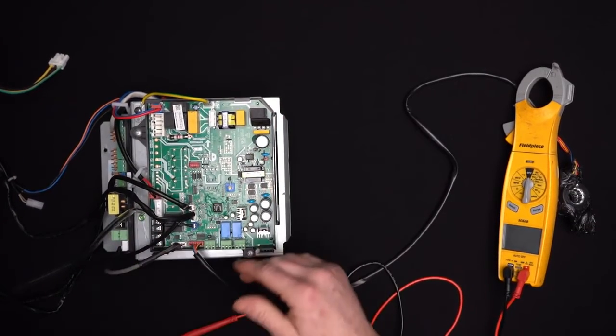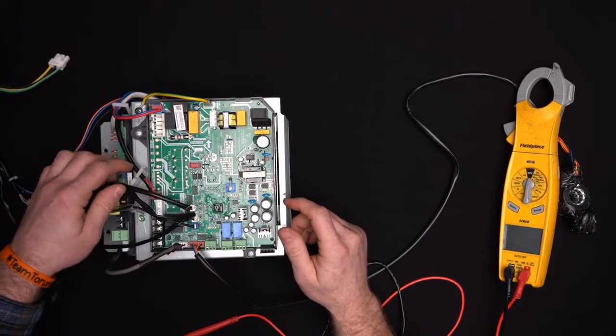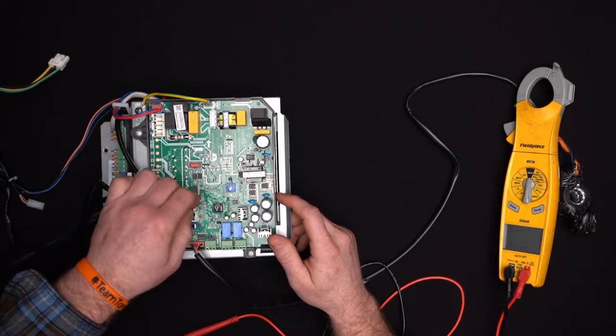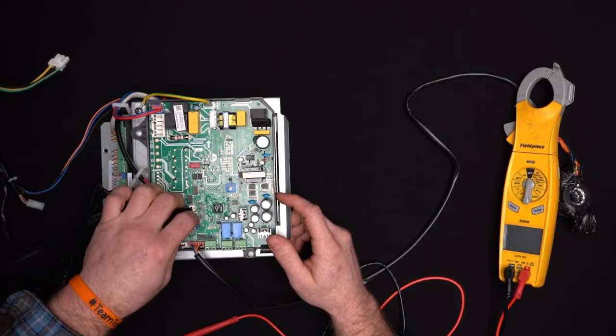So once we're here, we're going to move down to our thermistors. All our thermistors are right in a row here. We have a two-pin connector, a four-pin connector, and another two-pin connector.